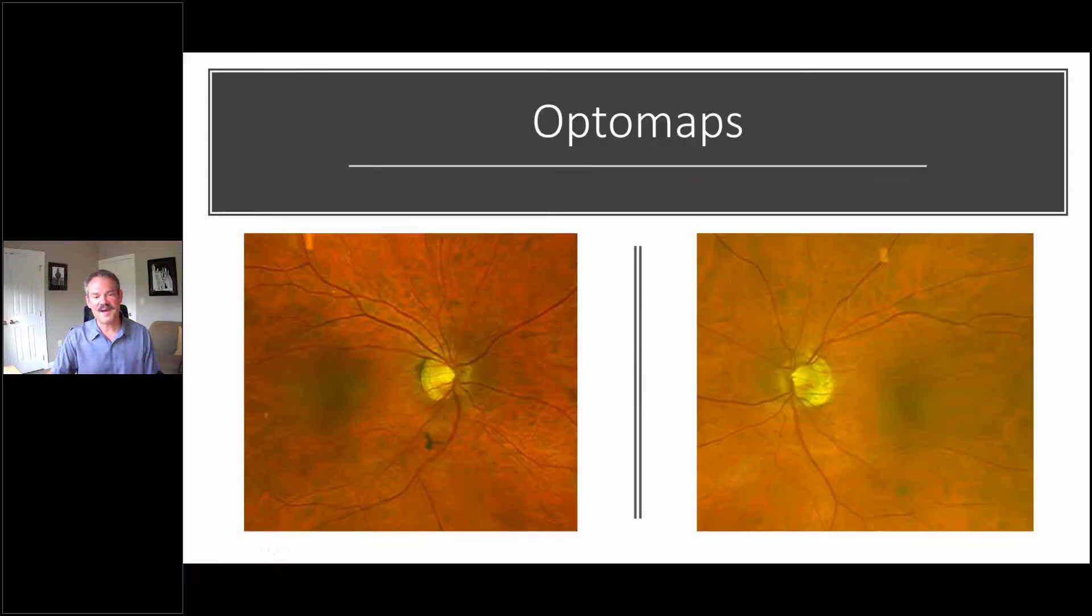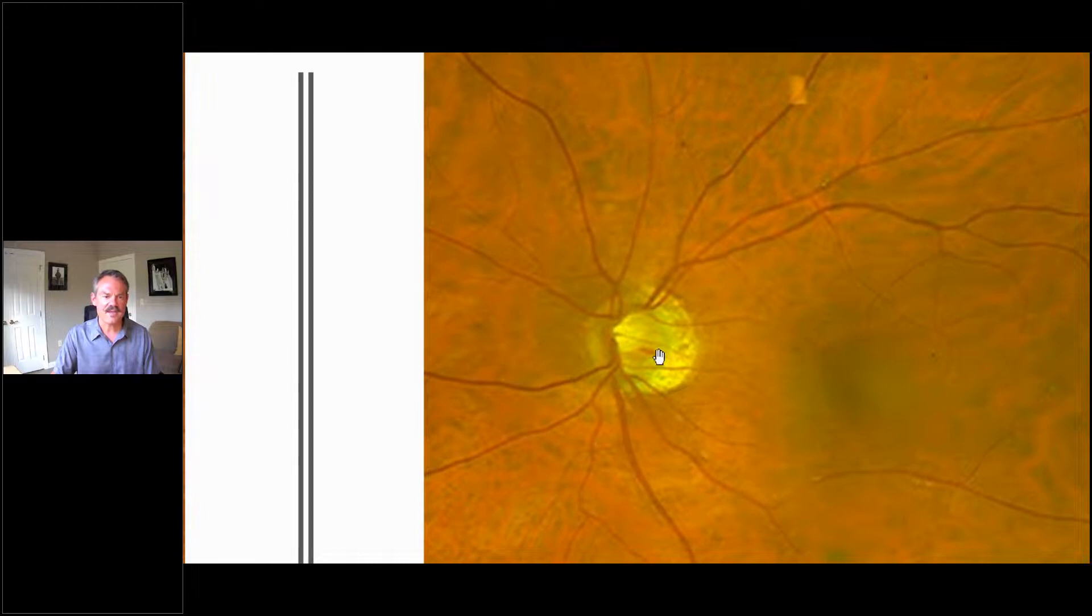One final piece of the puzzle here are the optic nerve photos from our Optomap. Here's the right eye, here's the left eye. If you look really closely here, we can tease out that here is a really small Drance hemorrhage.